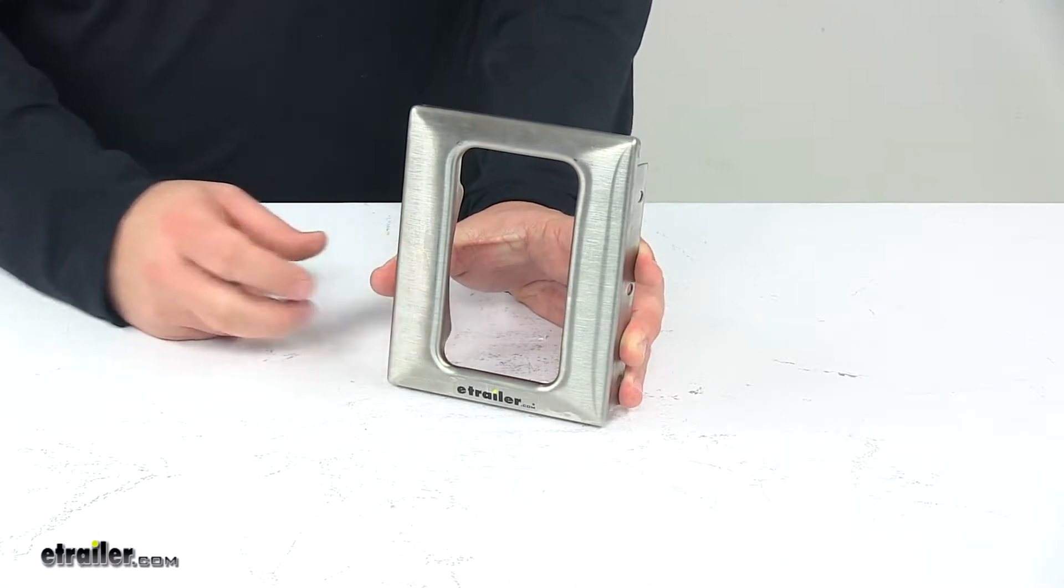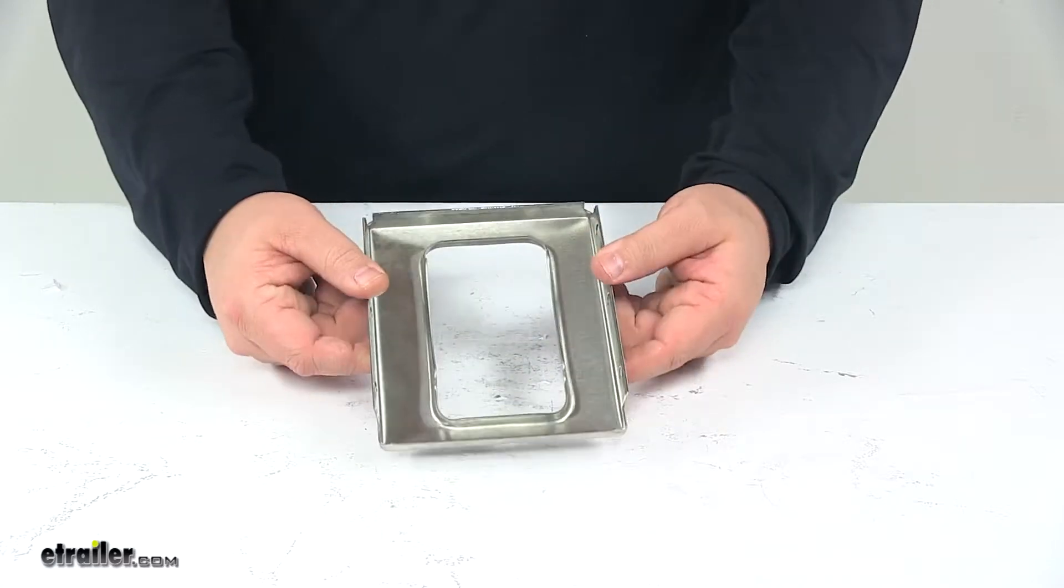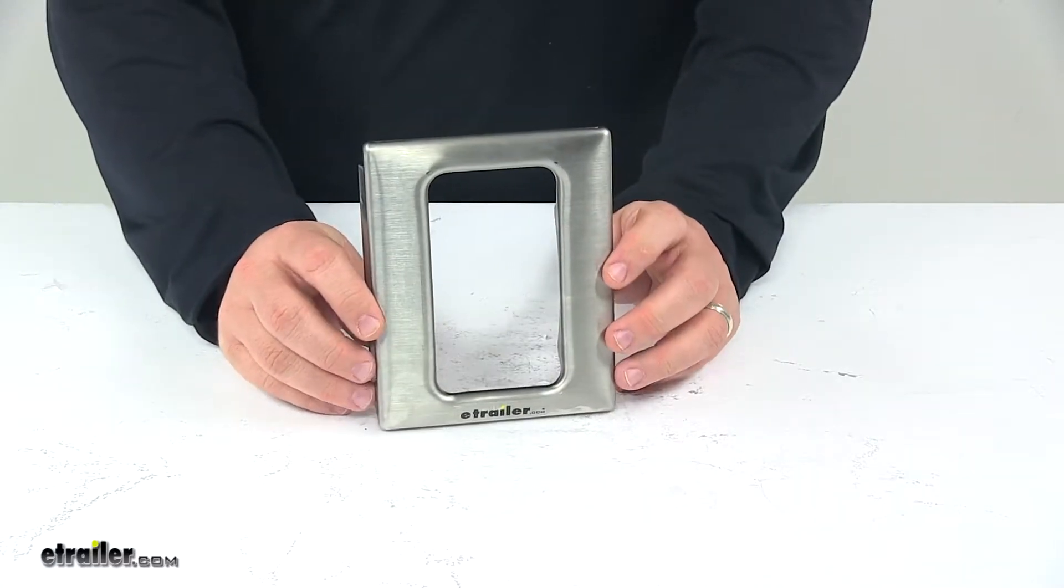This unit converts your winch from a cable to a strap up to two inches wide. It's a metal plate with protective finishing, keeping it safe from the elements.